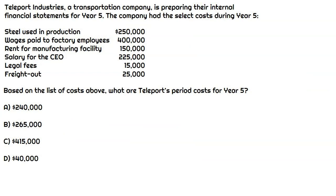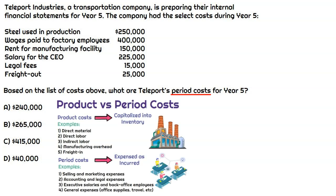In this question, we have some financial information for Teleport Industries, who are preparing their internal financial statements. We need to figure out which costs would be classified as period costs. Period costs and product costs are the two related categories — product costs are inventory-related, while period costs can be thought of as operating expenses incurred to run the business but not necessarily related to producing the product itself. We'll go through each cost and total up the period costs at the end.